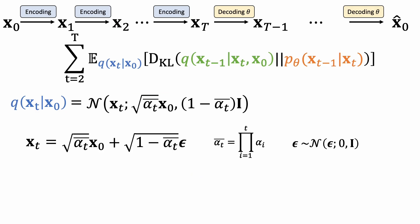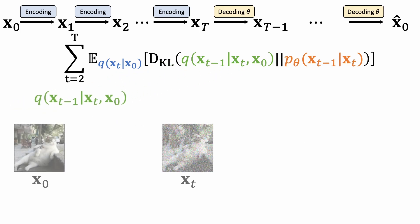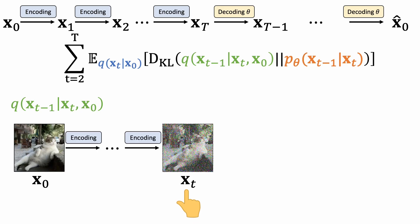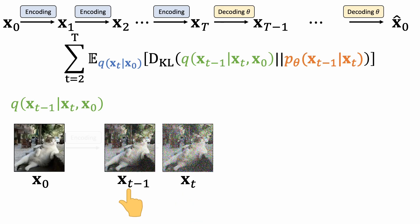This means that we can directly sample xt from this Gaussian distribution. The second term says the following. Suppose we know the clean image x0 and the noisy version of it after t forward diffusion steps. What is the probability of a less noisy image xt-1?